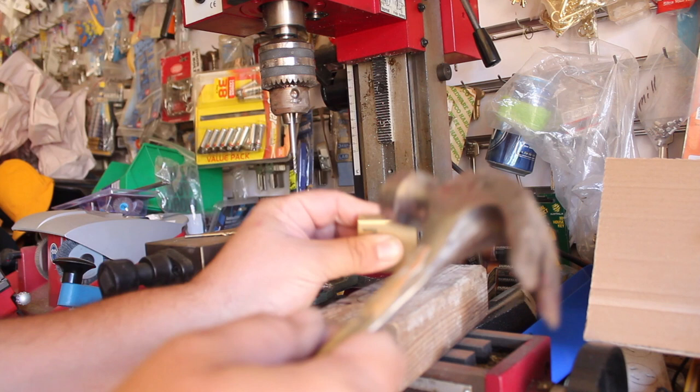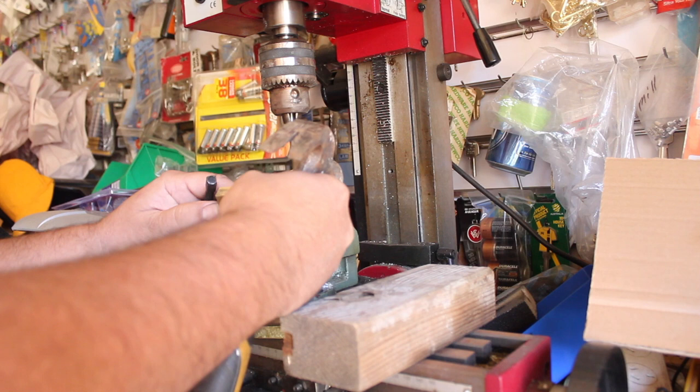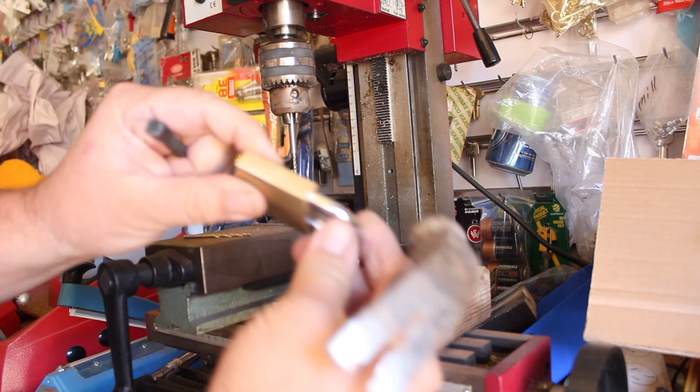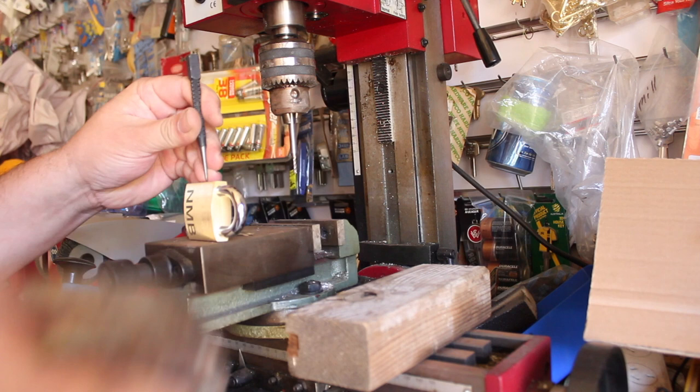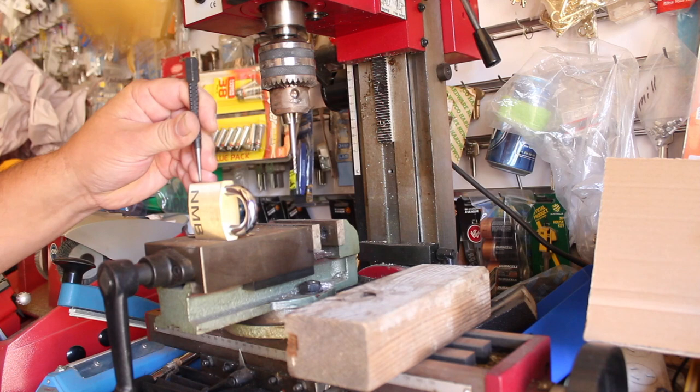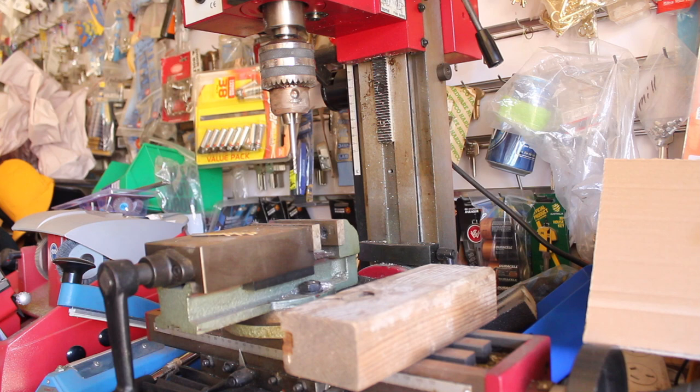I can start to see some very small circles and those are exactly what we want. What we need to do now is get a center punch, locate each and every one of them, and give them a tap. That's the first one done, you can see the indentation. Second one, this one has five but you can get six on some padlocks. We've got three so far, four. You don't want to tap them too far. It's got one, two, three, four, and five.